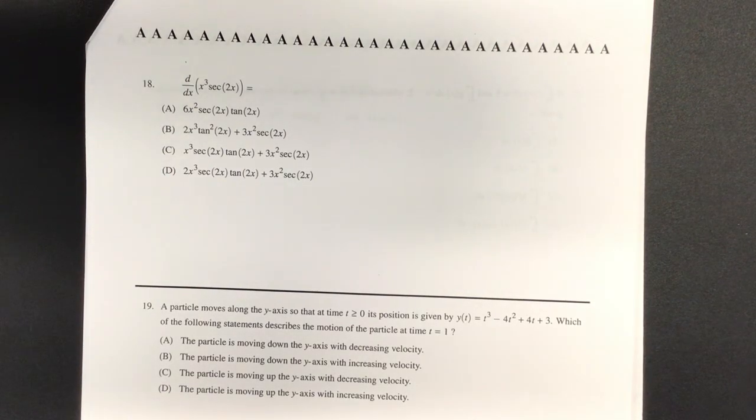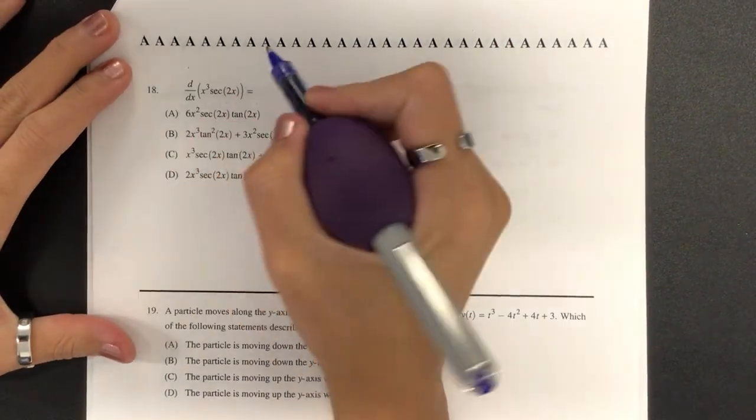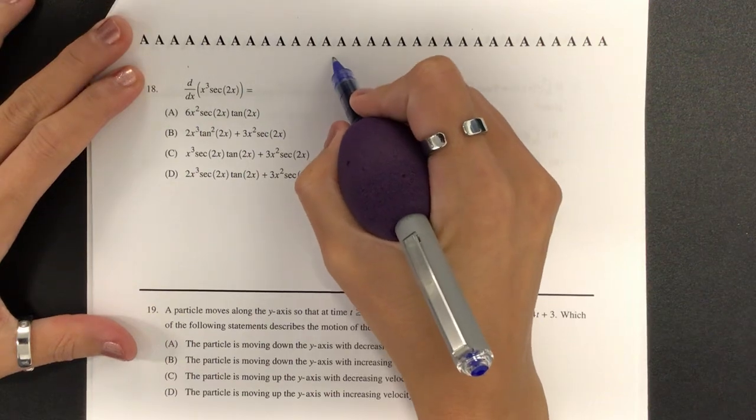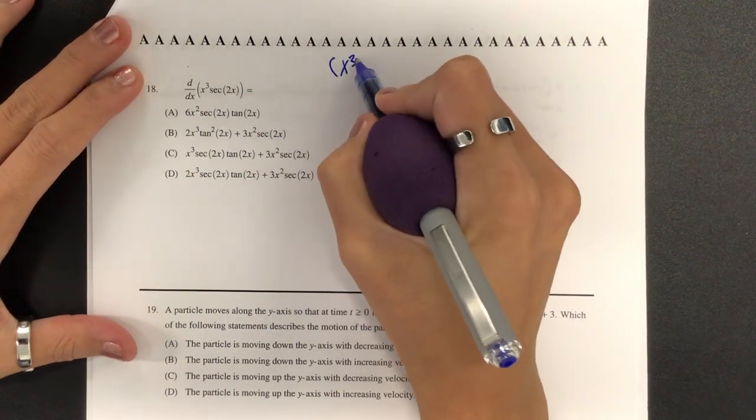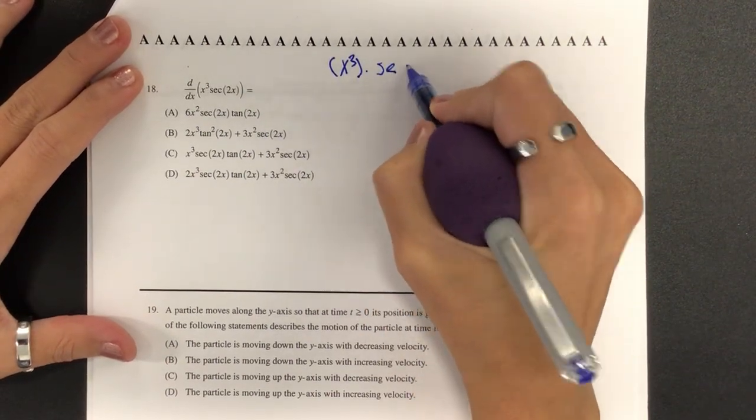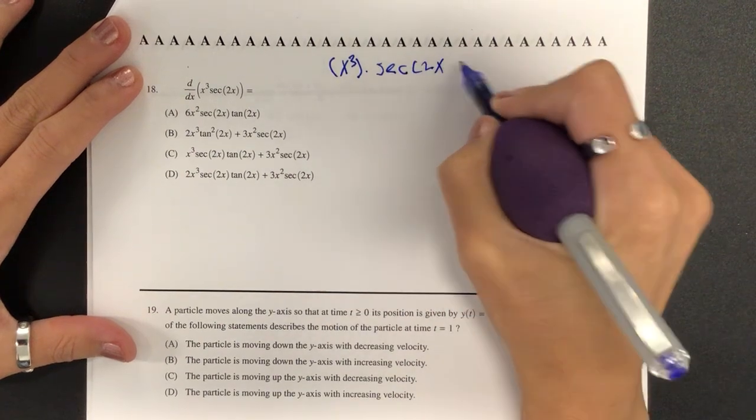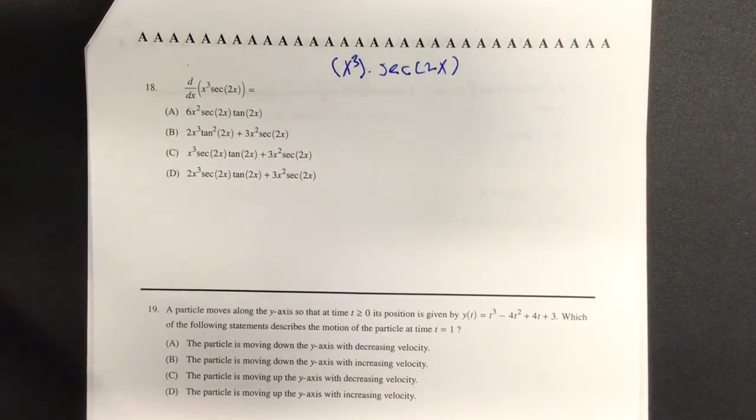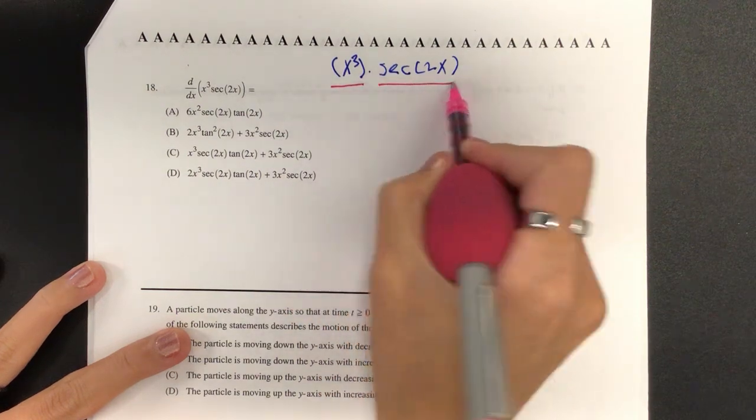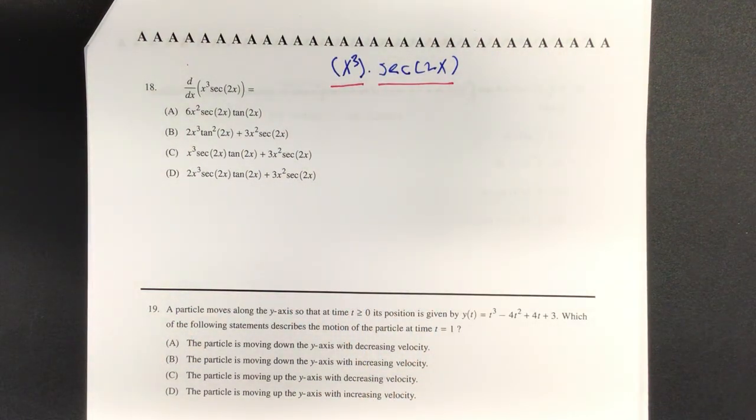So we're finding a derivative of x squared and secant of 2x. Let's rewrite this, because I like parentheses. We have x cubed times secant of 2x. And I'm going to actually underline the two parts. So what rule am I going to use on this one? The product or the quotient? Product.